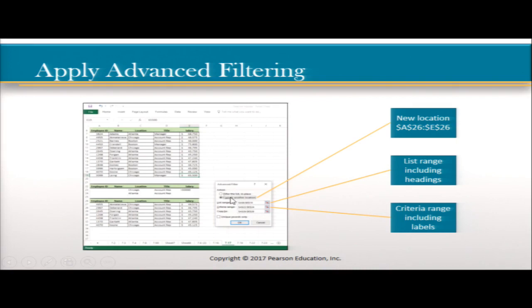This is something that's going to come up in your homework — advanced filtering with the criteria range. Just know you'll find it under the Data tab. Here you specify the list range. In this example, they chose to copy to another location — A26 to E26 — and listed the range including the headings. When it copied, it took the headings from the data list and repeated them in the filter criteria range.